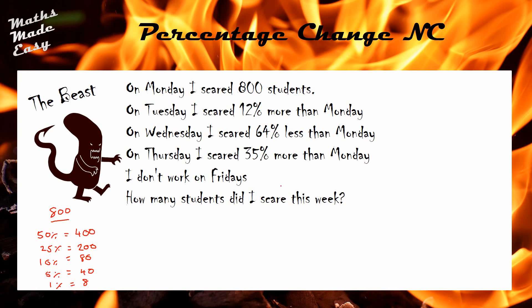Using those key percentages: on Tuesday he scared 12% more than Monday. 12% = 10% + two 1%s = 96 students. Adding that to 800 means on Tuesday he scared 896 students. On Wednesday he scared 64% less than Monday. 64% = 50% + 10% + four 1%s = 512. So 800 minus 512 gives 288 students on Wednesday.